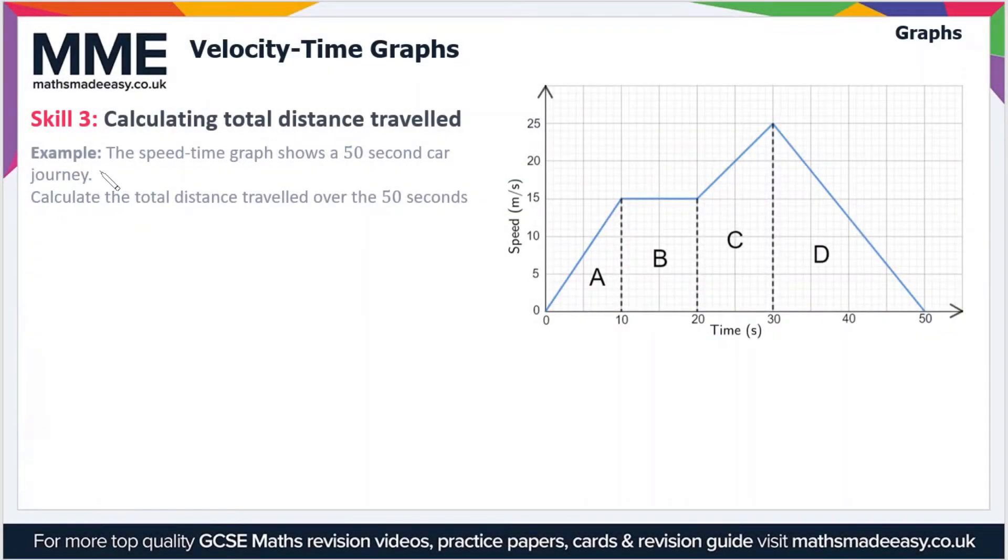Moving on to the third skill: calculating the total distance traveled in a speed-time graph. Distance equals speed times time, so in a graph, that's the area underneath the graph. Once again, we'll use the sections A, B, C, and D. This time we'll work out the areas of the shapes, and if we sum them together, that will give us the total distance.